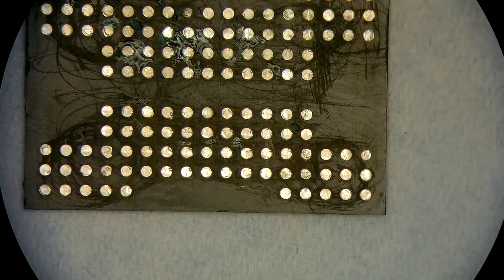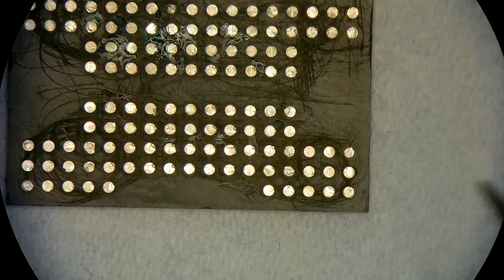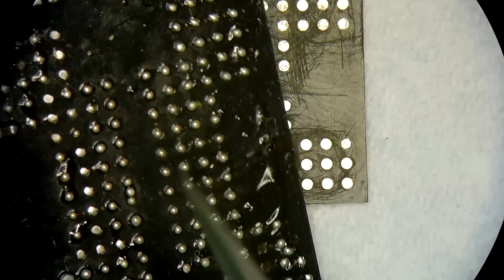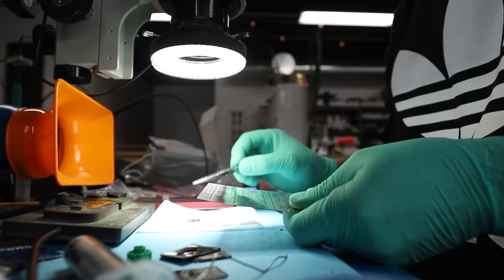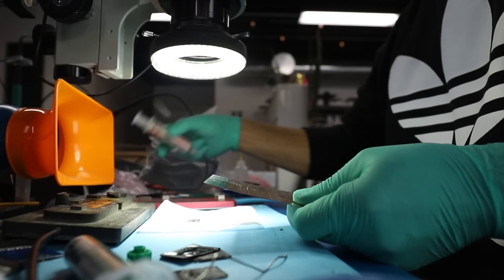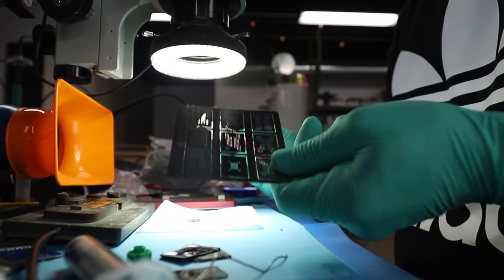Re-balling is a procedure where the little tiny solder balls underneath the chip are being formed so that it can mate the printed circuit board after. For BGA 132, I'll be using just regular MG Chemicals leaded paste and the stencil.